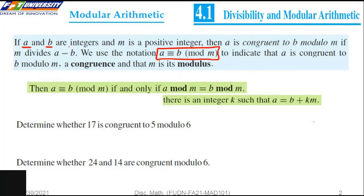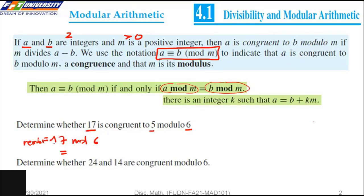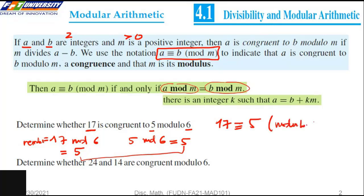If a and b are two integers and m is a positive integer, we have the notation a equals b modulo m. This holds if and only if the remainder of the two divisions is the same. For example, 17 modulo 6 is 5 and 5 modulo 6 is 5, so the remainder is the same.